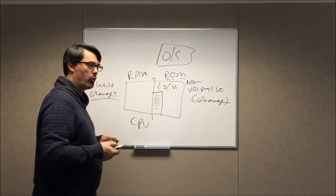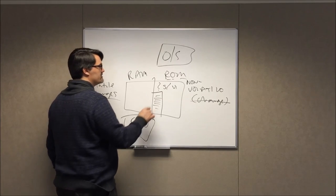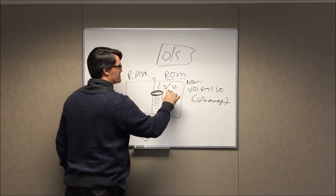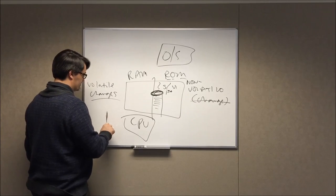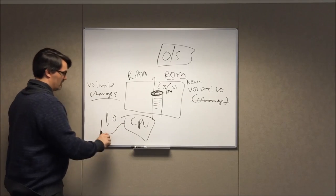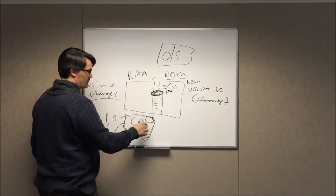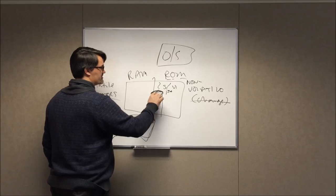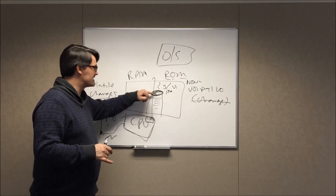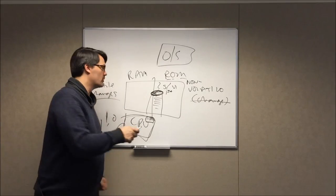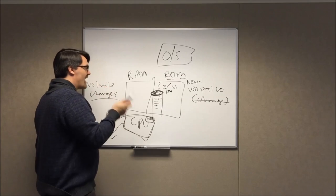Those startup instructions are stored in read-only memory. The CPU knows the exact location in memory of the first instruction to execute. When you apply power — plug the machine into the wall — stored in a tiny memory on the CPU is the address of the first instruction. Every time you turn the computer on, it goes to that address and starts executing from there.